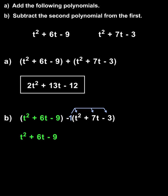So, after rewriting our first polynomial, t squared plus 6t minus 9, we have negative 1 times t squared, or negative t squared, negative 1 times positive 7t, which is negative 7t, and negative 1 times negative 3, which is positive 3.